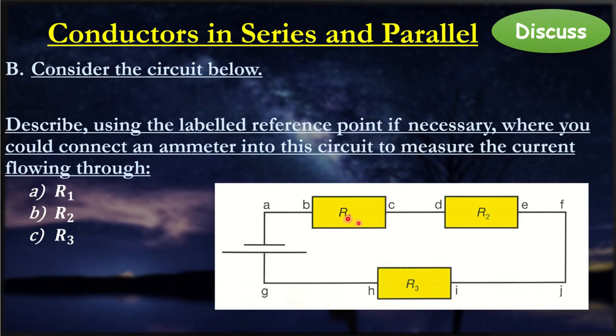It's actually anywhere in the circuit. Anywhere in the circuit will be an appropriate position to measure out the current for this example here. Because what's actually happening, remember current is just the flow of charged particles. No matter where I look in this circuit here, the flow of the electrons will be exactly the same.